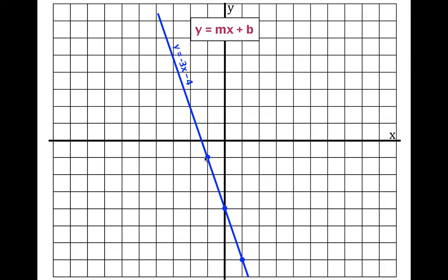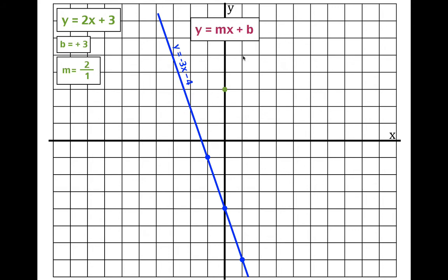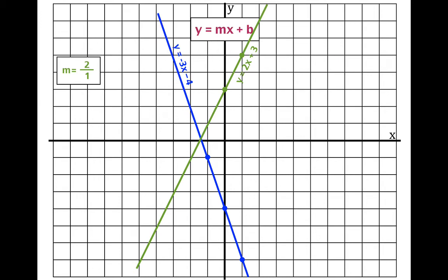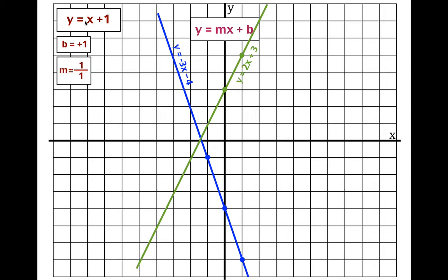Two more to go. Next is y equals two x plus three. The y-intercept is three and the slope is two, written as a fraction: rise over run, two over one. Put the first point at three, rise up two, run over one, and that gives the second point. That is the line y equals two x plus three. The last one is y equals x plus one. The y-intercept is one. By convention we don't write the coefficient, but there is a one in front of x, so the slope is one over one. Put the first point at plus one, rise up one and over one for the second point. That is the line y equals x plus one.